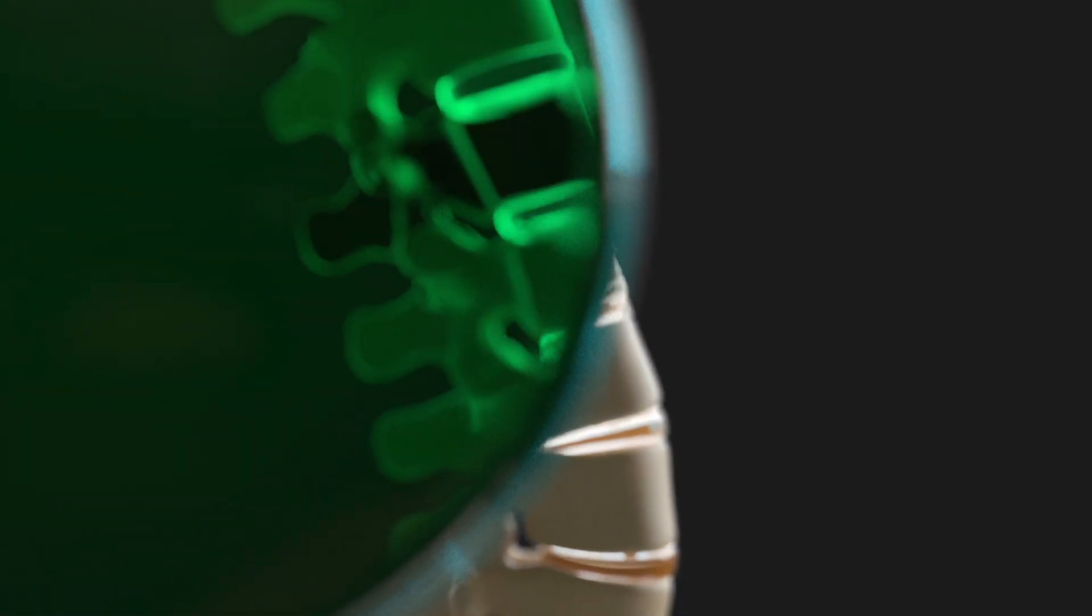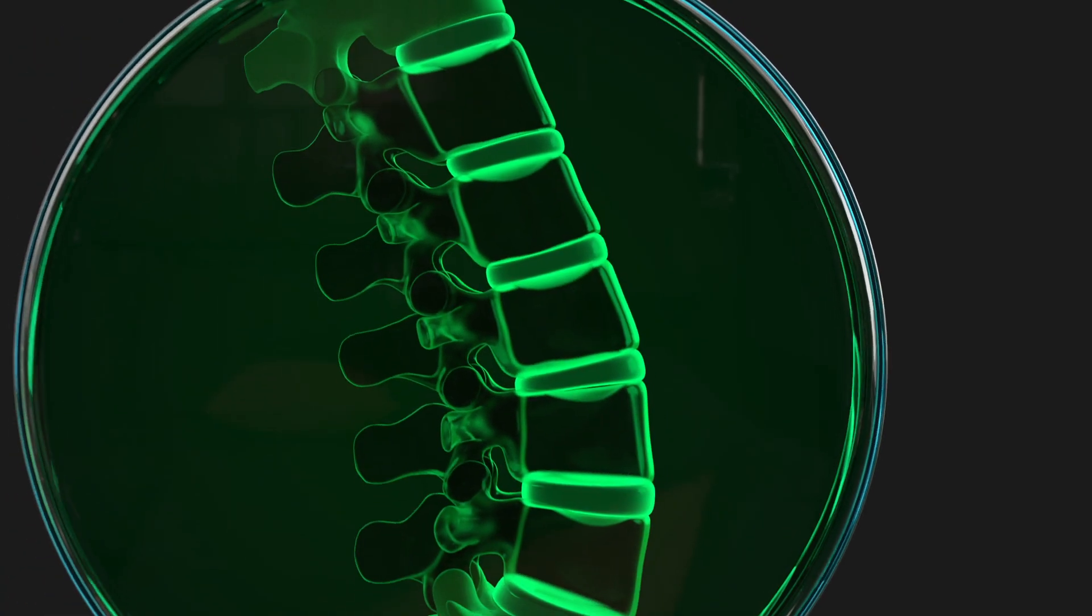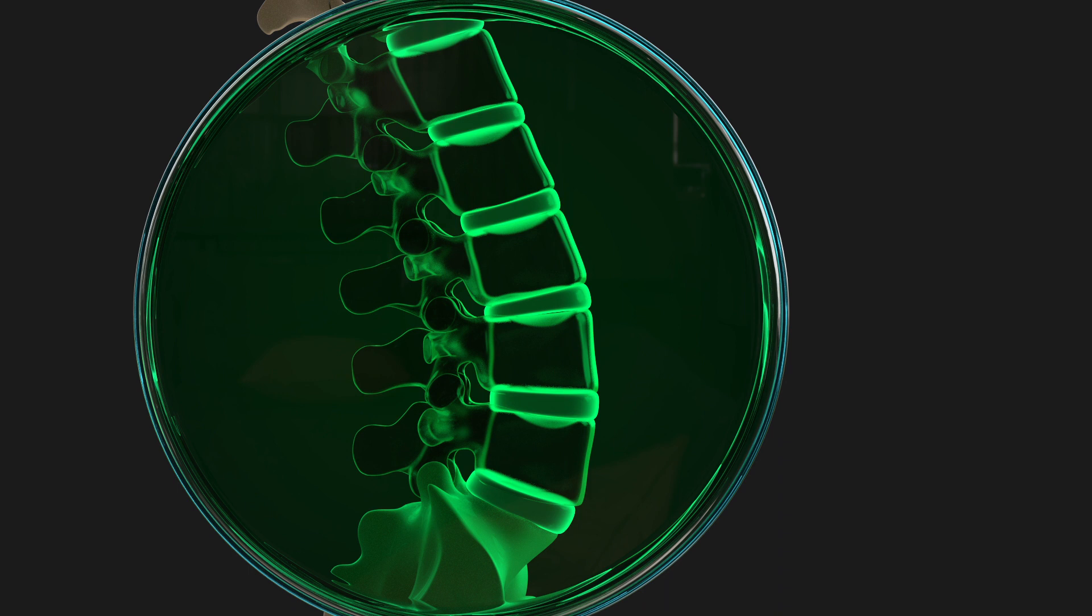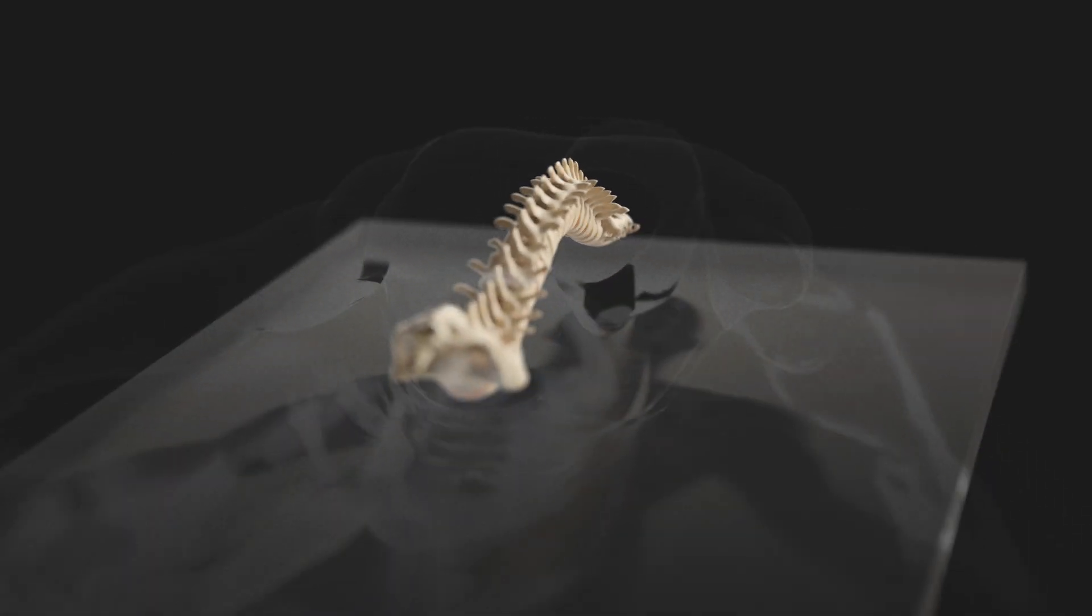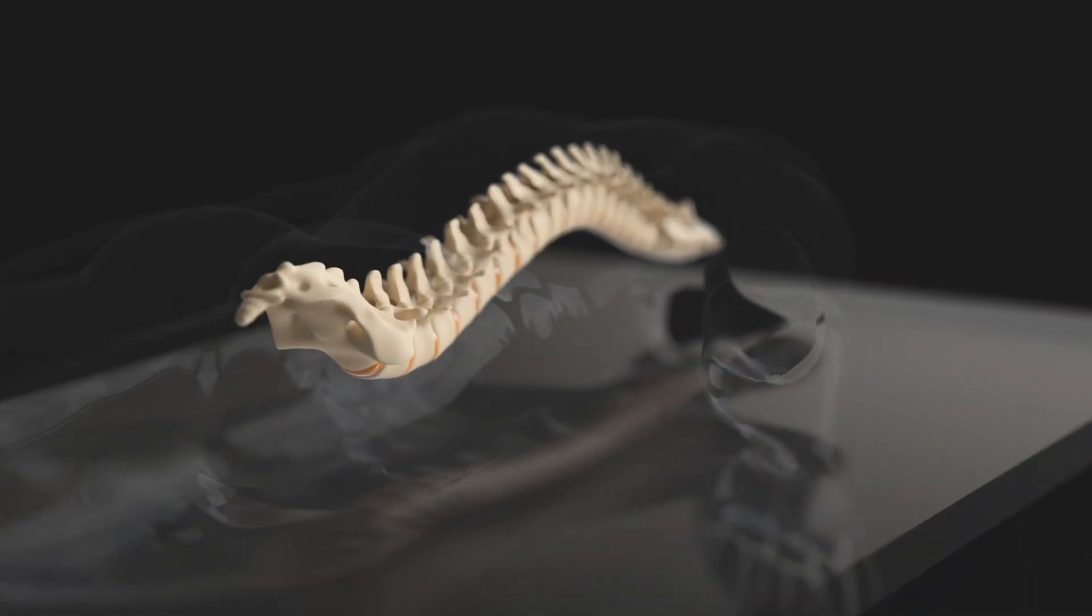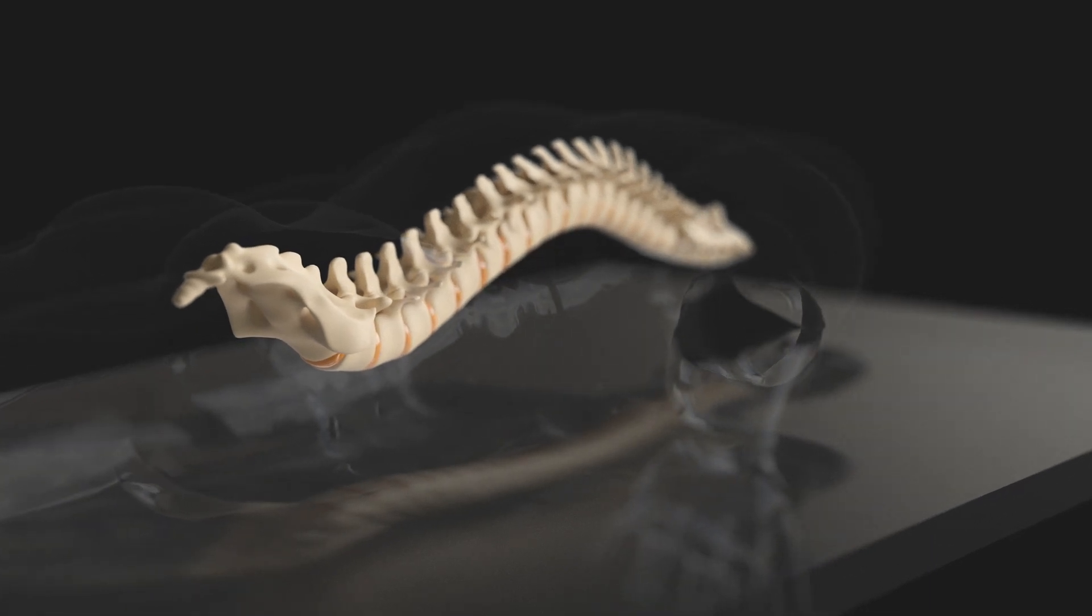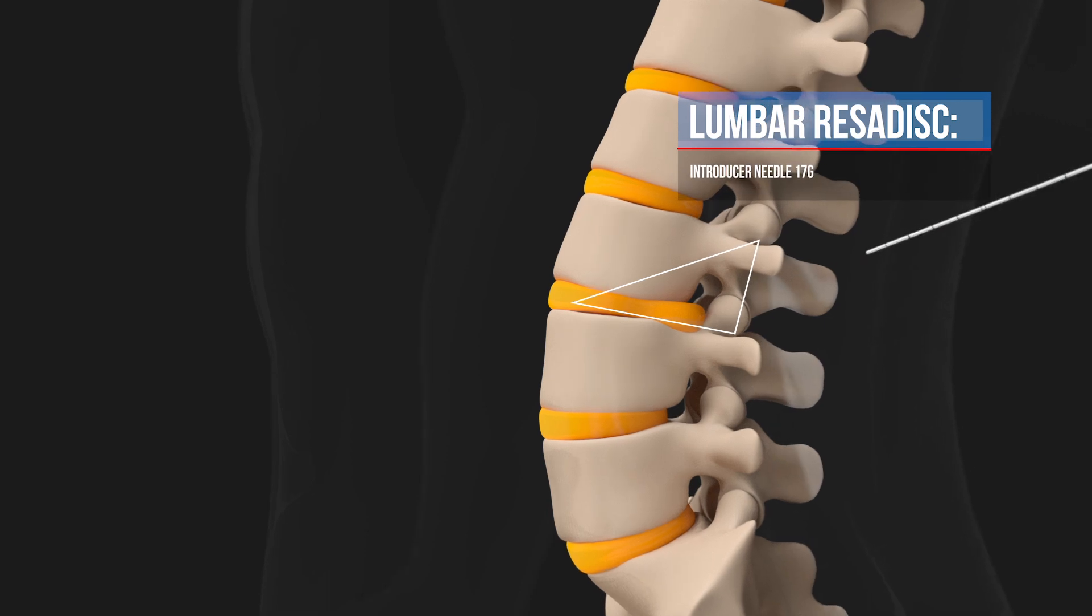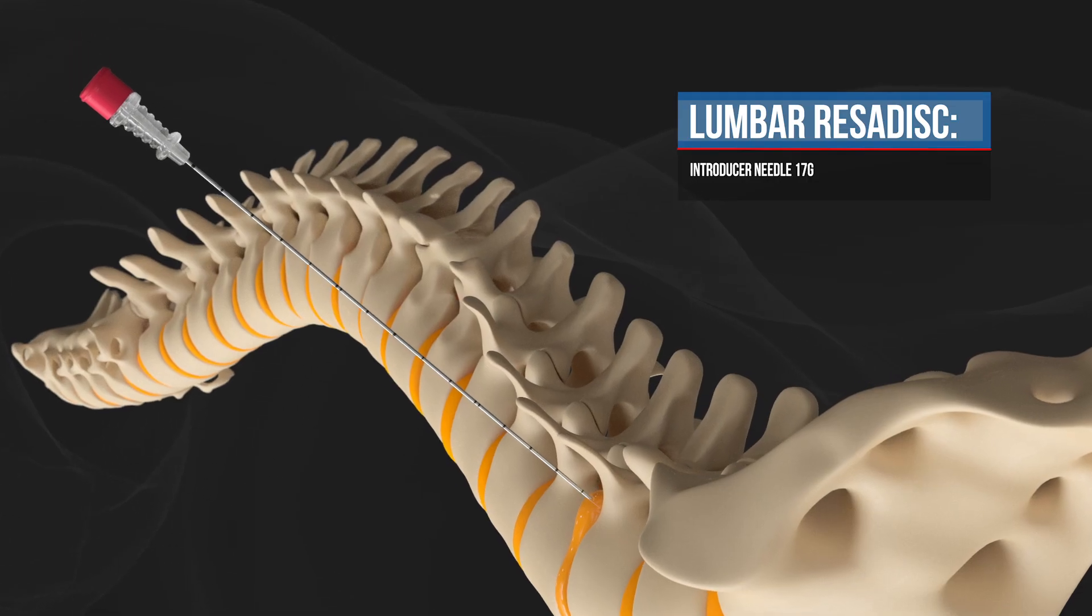The lumbar disc decompression procedure is performed with percutaneous access under fluoroscopic guidance. Place the patient in a prone position on the operating table and advance the needle through the Kambin triangle passing the nucleus annulus junction.